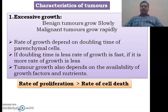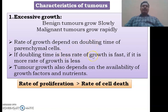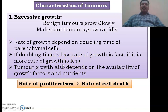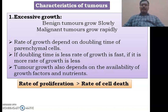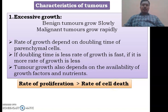Coming to the characteristics of tumors, one of the most important characteristics is excessive growth. Benign tumors will grow slowly and malignant tumors will grow rapidly. This growth depends on doubling time. If the doubling time is less, the rate of growth will be fast; if more, the rate of growth will be less. Doubling time is the time taken by a cell to divide into two. Tumor growth also depends on the availability of growth factors and nutrients. In malignant tumors, the rate of proliferation is more than the rate of cell death, which is why we observe very large tumors.